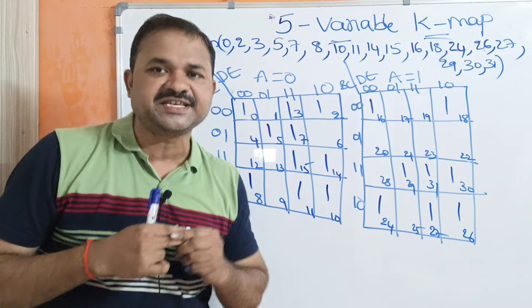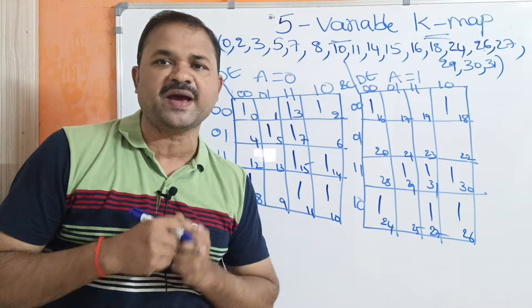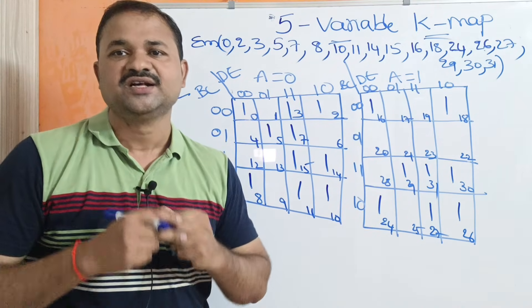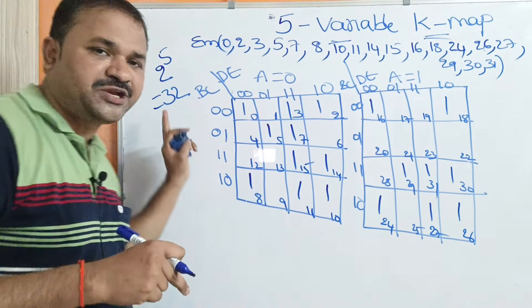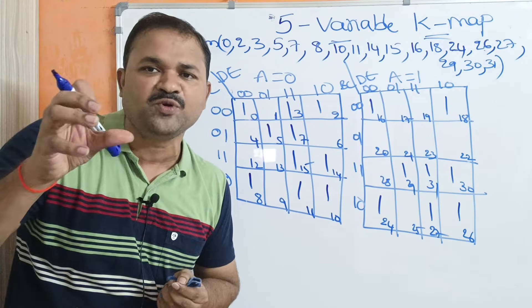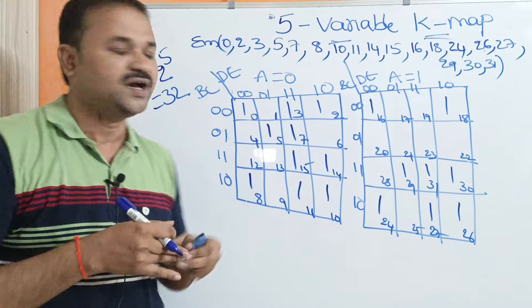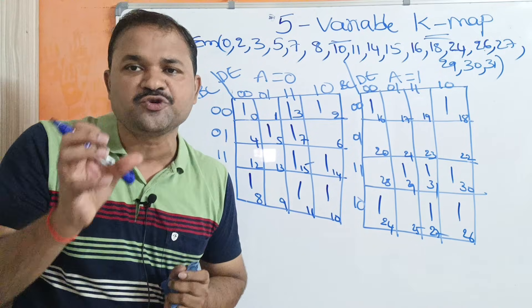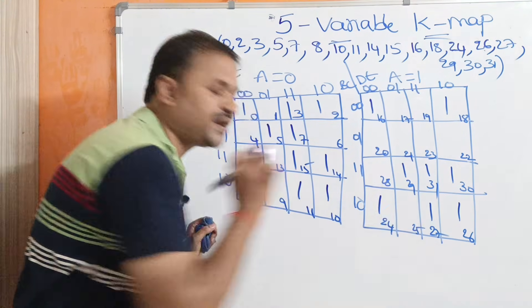Let us discuss the 5-variable Karnaugh map. Here we have 5 variables, so totally we will have 2 to the power 5, that is 32 cells. We know that a 4-variable Karnaugh map contains 16 cells. But now we need 32 cells, so we need to maintain two 4-variable Karnaugh maps.